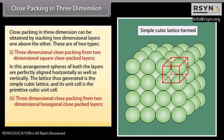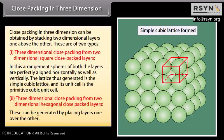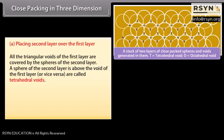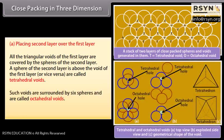Three-dimensional close packing from two-dimensional hexagonal close packed layers can be generated by placing layers one over the other. A) Placing the second layer over the first layer: all the triangular voids of the first layer are covered by the spheres of the second layer. A sphere of the second layer above the void of the first layer creates tetrahedral voids. Voids surrounded by six spheres are called octahedral voids.